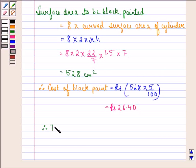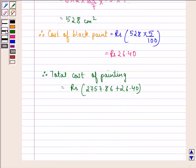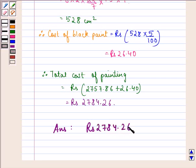Therefore, we can say that total cost of painting is equal to rupees 2757.86 plus 26.40, and that is equal to rupees 2784.26. So our answer to this question is rupees 2784.26 approximately.